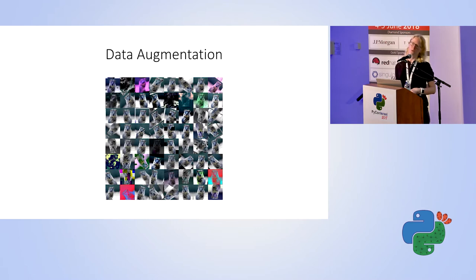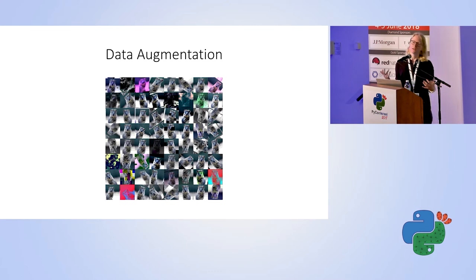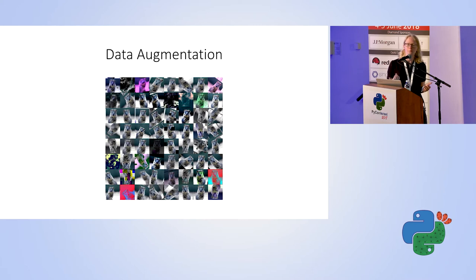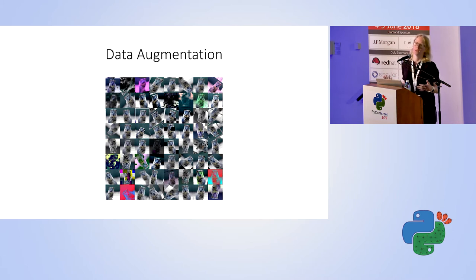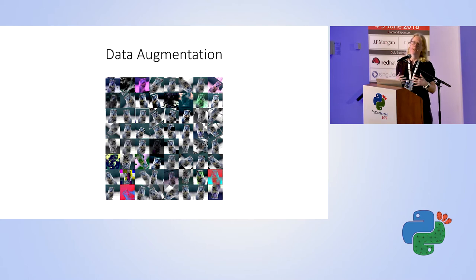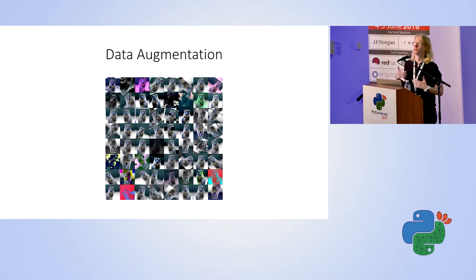Deep learning algorithms use large amounts of data to work, and if you have a small dataset, sometimes you won't be able to generalize. You can learn something about your small dataset but not about the real world. The usual approach is to do something called augmentation. There are basic techniques — for example, you can flip images, change their colors, rotate them, crop them. But our idea is to do augmentation that is more sophisticated and to use the knowledge we have about the world.